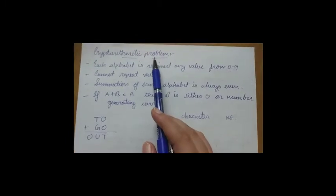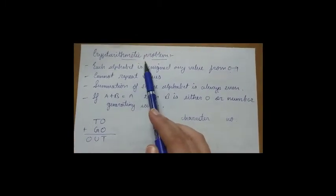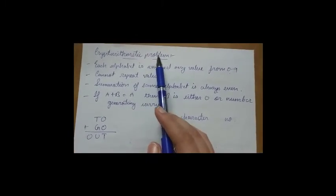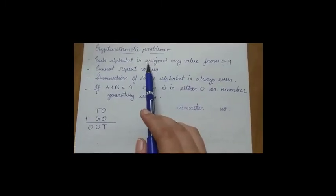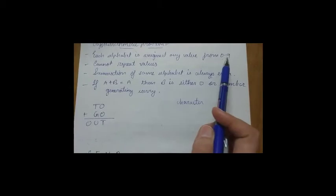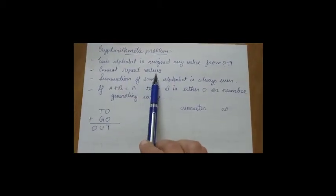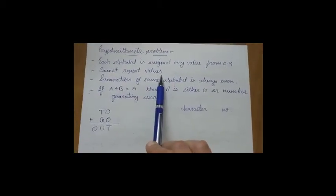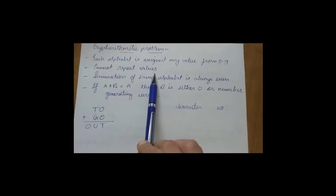Hello everyone, today we will see cryptarithmetic problems, which are examples of higher order CSP. Here, each alphabet is assigned any value from 0 to 9. Then we cannot repeat the values. For example, if we assign 5 to A, then we cannot assign 5 to any other alphabet.